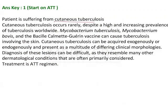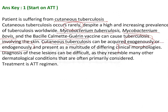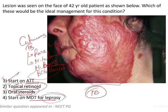So the patient is suffering from cutaneous tuberculosis — a rare disease caused by Mycobacterium tuberculosis, Mycobacterium bovis, and BCG vaccine, involving the skin. Cutaneous TB can be acquired from outside or endogenously, presenting with a multitude of clinical morphologies, making diagnosis difficult. However, this particular dermatological condition is consistent with TB, so the answer is to start the ATT regimen.